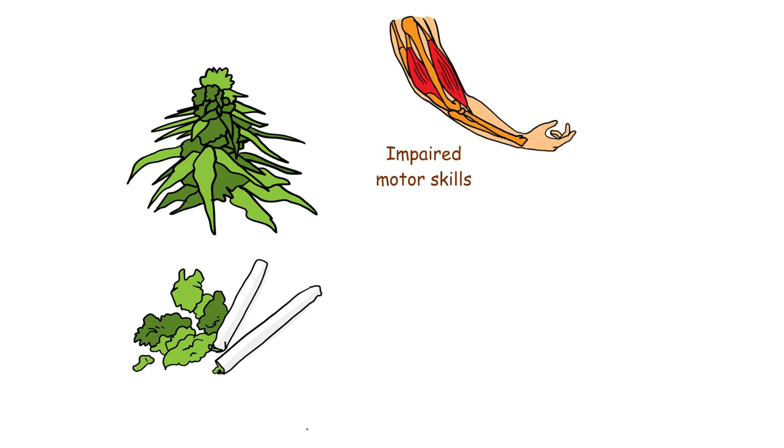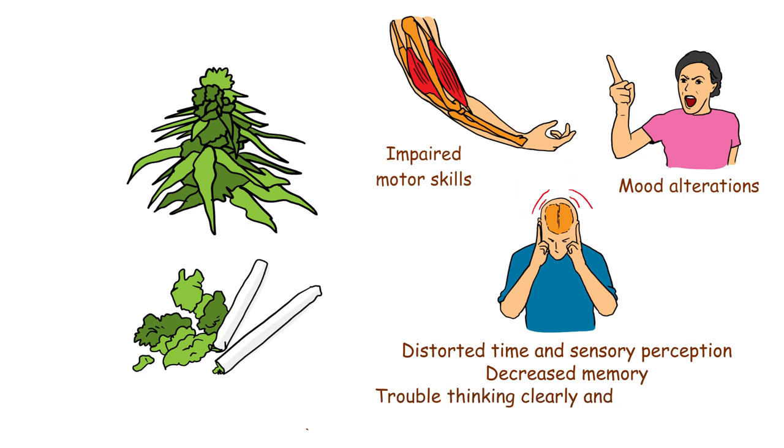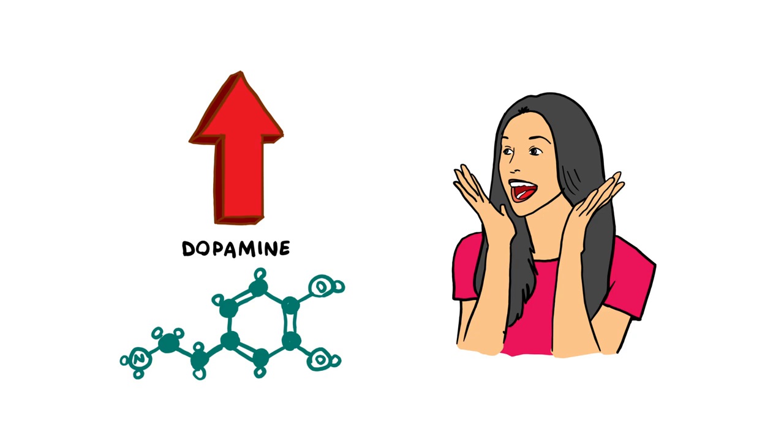When someone abuses marijuana, impaired motor skills, mood alterations, distorted time and sensory perception, decreased memory, and trouble thinking clearly and solving problems are all common short-term side effects. Marijuana also interferes with levels of dopamine in the brain, causing the euphoric high.